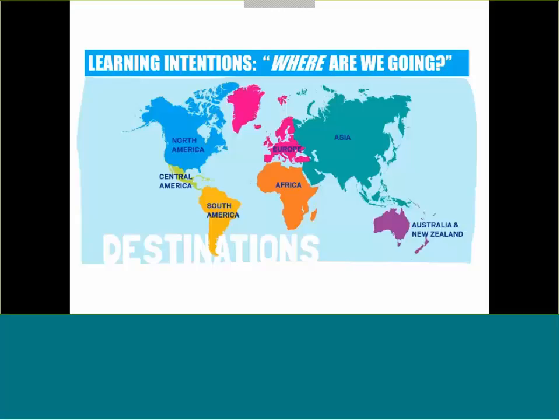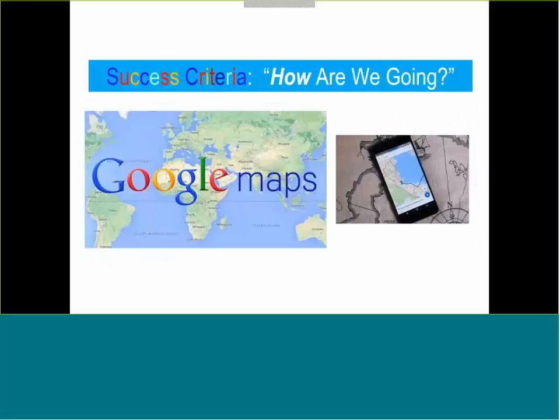Keeping with that travel metaphor, we'll move on to success criteria. Often these two are used interchangeably, but they are actually distinct from one another, and yet mutually interdependent. Success criteria represent the 'how are we going.' They provide students, in particular, with the clarity. These are specific descriptors of how students will achieve the learning intentions. When teachers and students have these success criteria clearly laid out at the inception of a unit or lesson, they do provide that roadmap to the destination that focuses instruction and helps motivate kids to engage in their own learning.